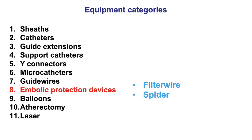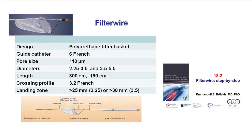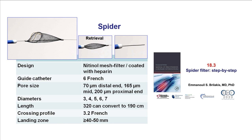Moving on to category number eight — embolic protection devices — indicated mainly for saphenous vein graft interventions, although they can also be used for cases with large thrombus burden. Two are available: the FilterWire and the Spider. Those will be discussed separately in individual videos.